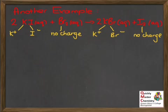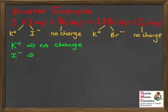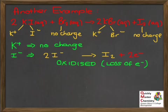The K⁺ ions are the same on the left and the right — no change, move on. The iodide ions I⁻ in the potassium iodide go from I⁻ into I₂. Two iodide ions make one I₂ molecule. Going from negative ion back to neutral atoms means losing electrons — each iodide ion loses one electron, and with two iodide ions we lose two electrons total. Loss of electrons: plus two electrons on the right. That's obviously oxidation.